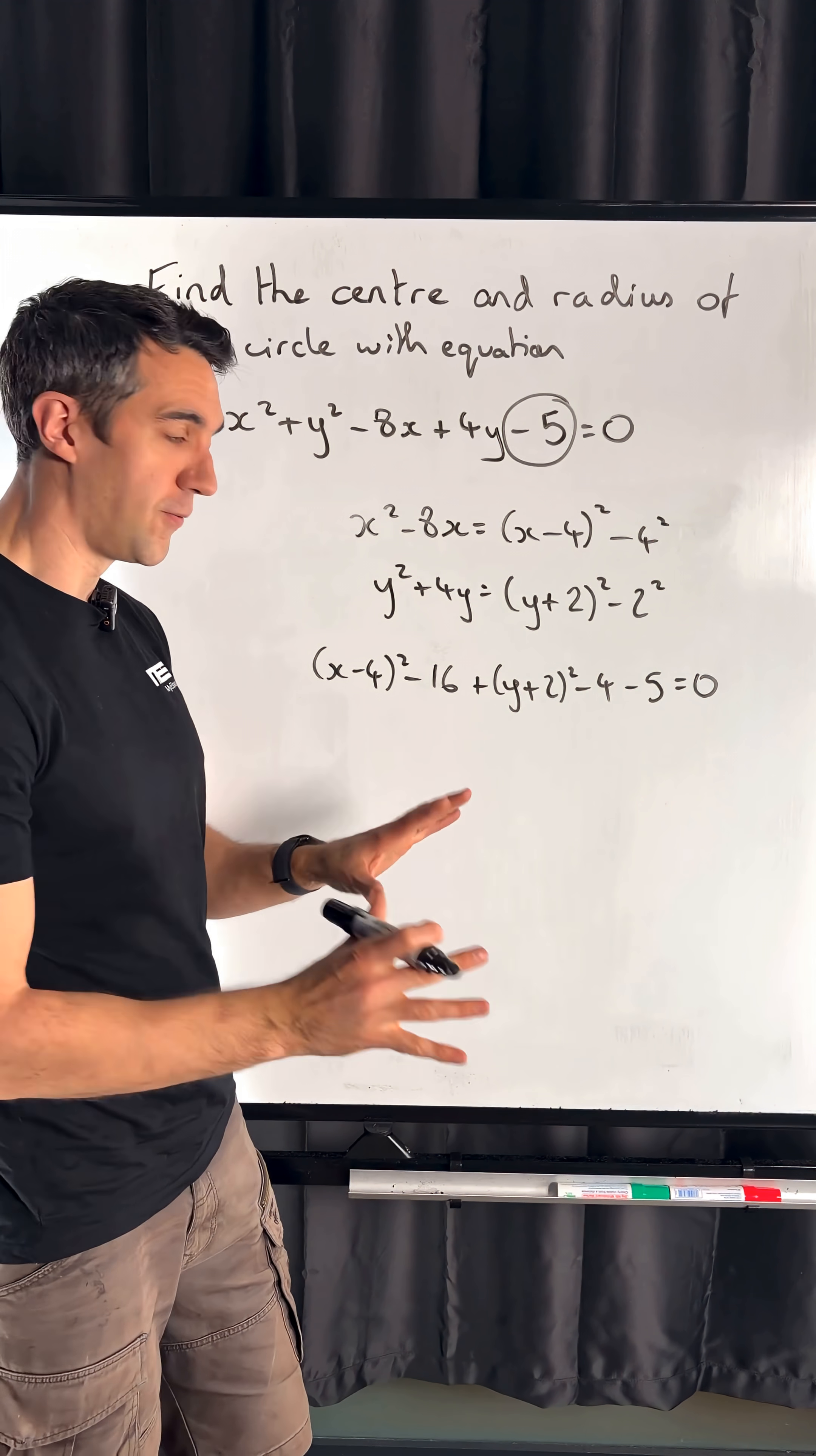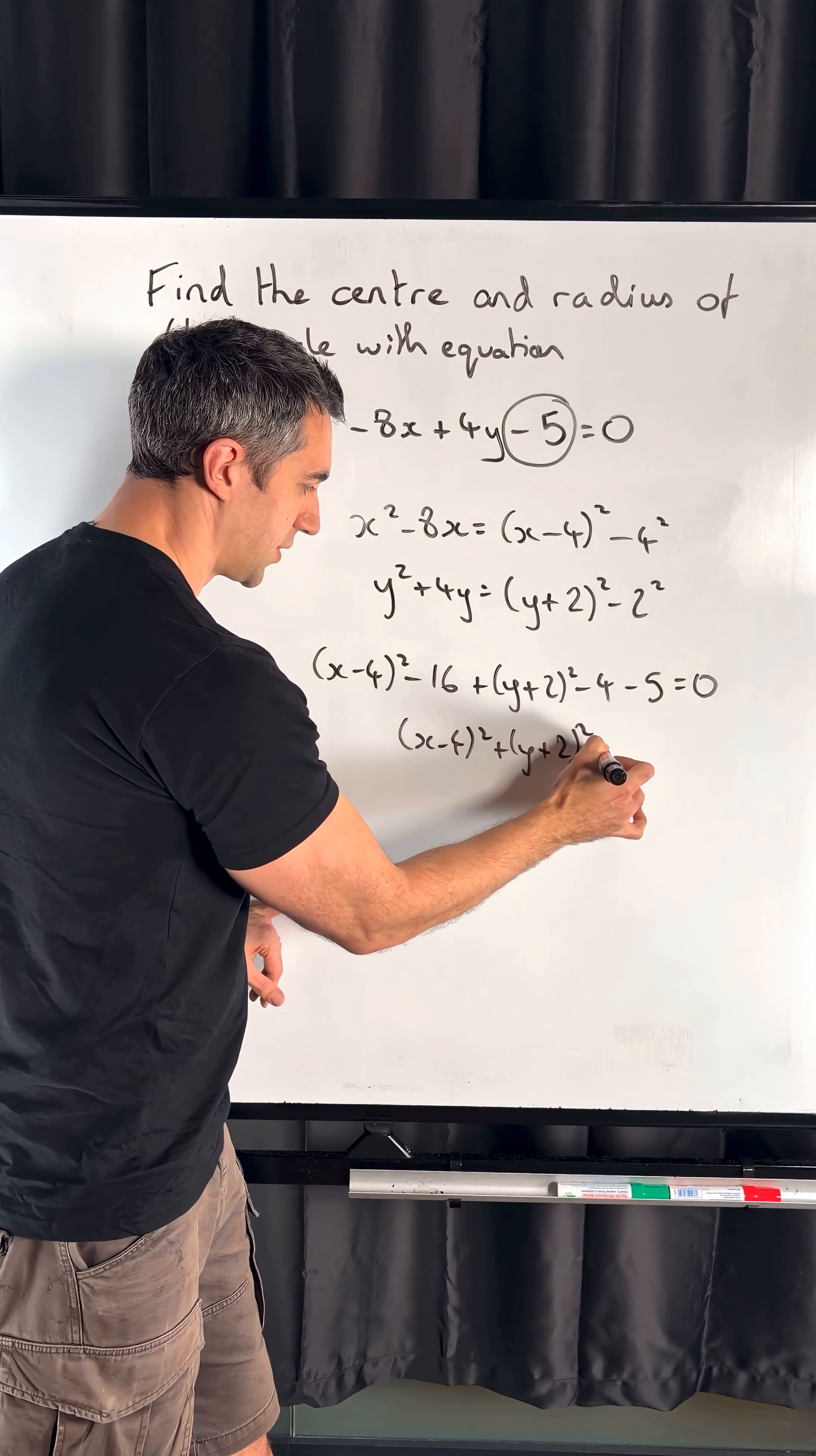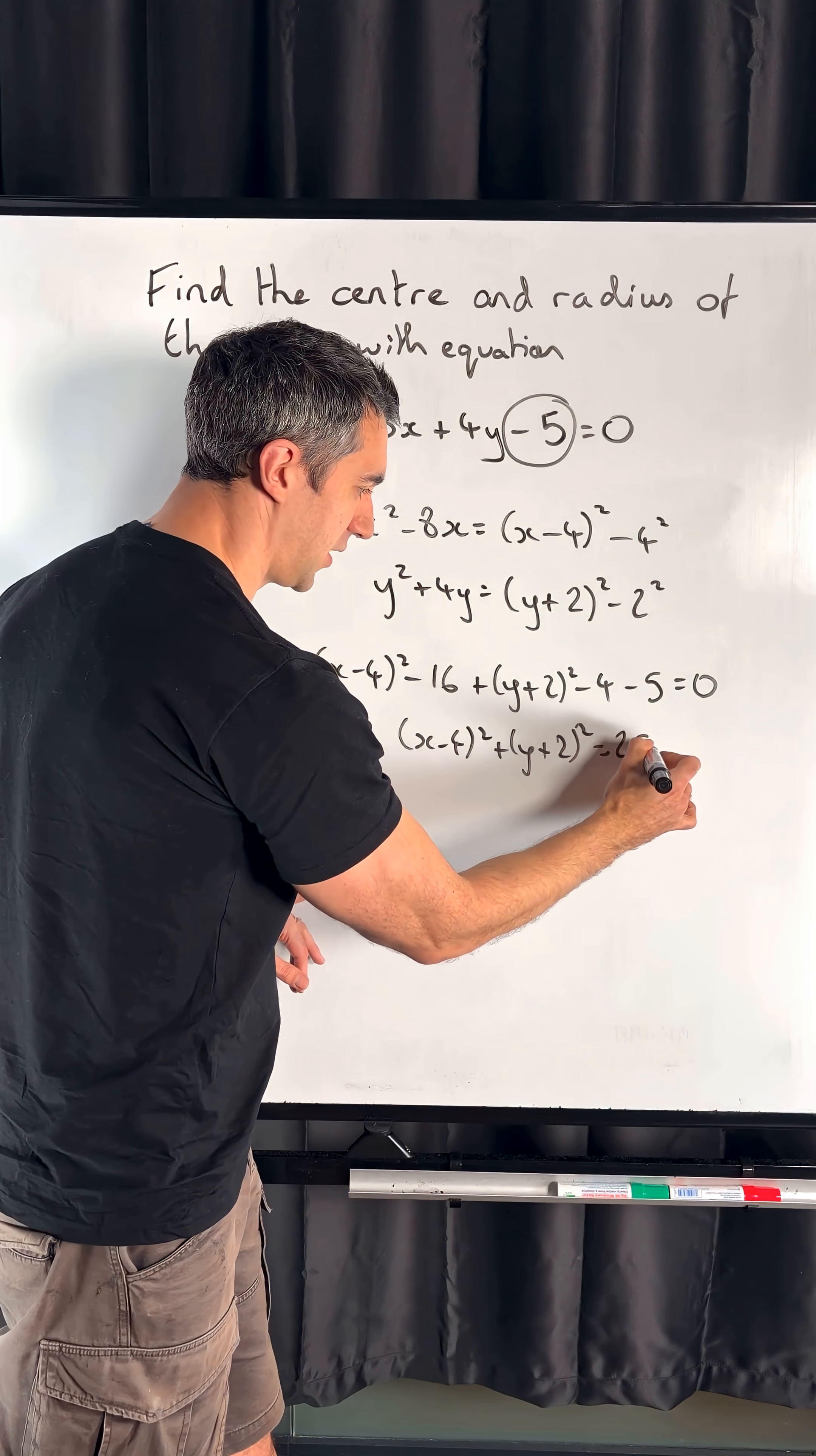It's now all equal to 0 as we had up here, and we're going to do our normal form of gathering all these numbers together, sticking them on the other side. So x minus 4 squared plus y plus 2 squared equals—we've got 16, 4, and 5 all negative, so we move them all to the other side, that'll be positive—so we get 25.